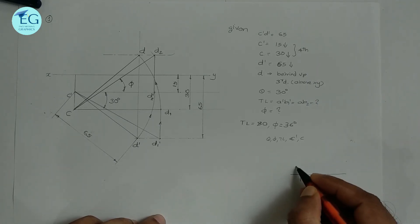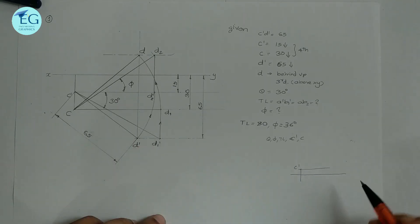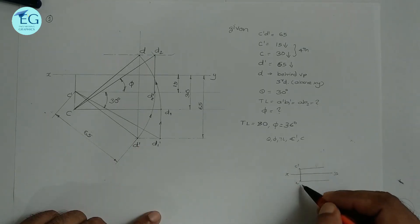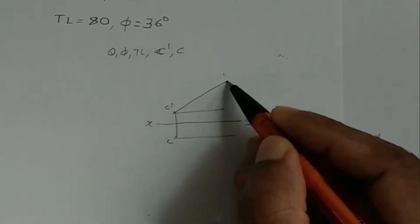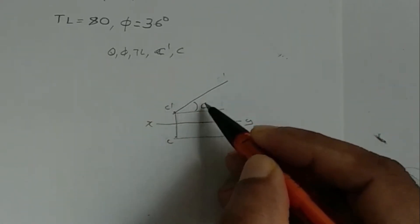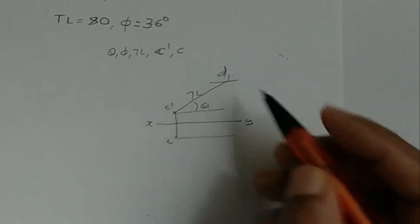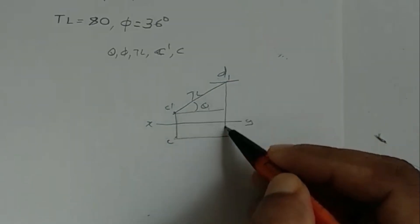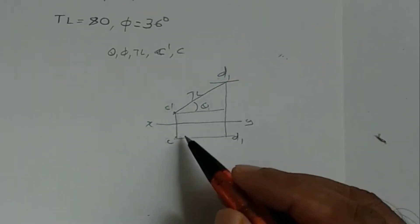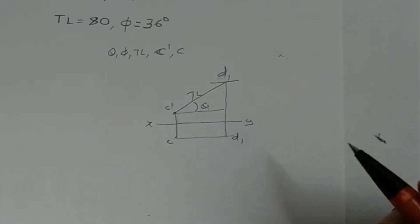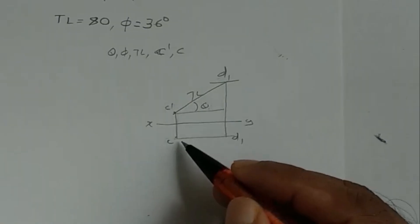In the same way, we can check the inclination with HP as given in the problem. Theta degrees gives the true length D1 dash. C dash D1 dash is the front view; the C D1 XY line pair is located accordingly. For inclination with VP, we have the true length and we assume the angle, which will be marked in the middle of the line.